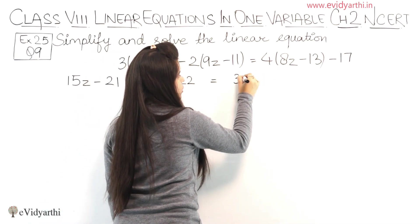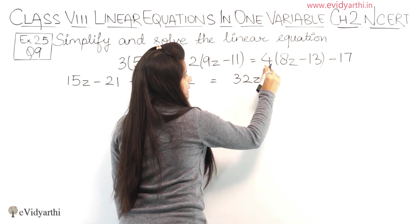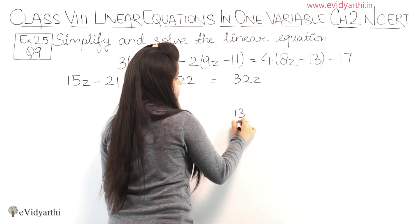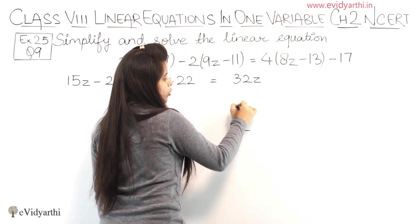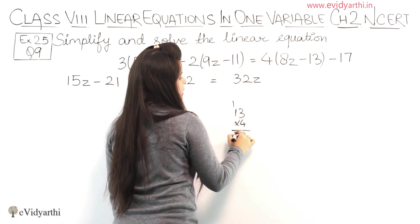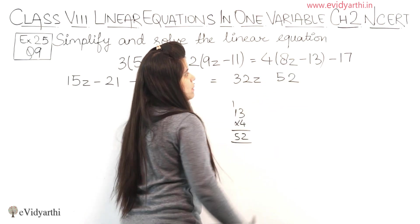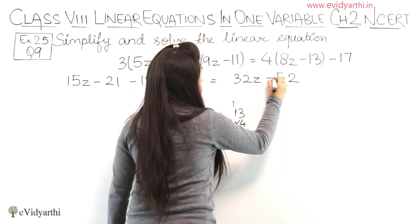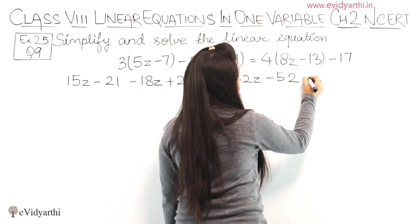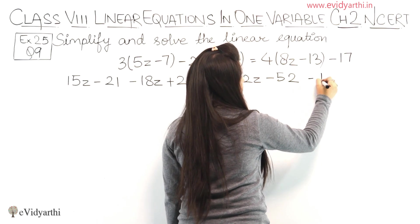8 times 4 is 32z, and then 13 into 4. Let's multiply 13 into 4: 4 times 3 is 12, 4 times 1 is 4 plus 1 is 5, so we have 52. Plus minus minus gives us minus sign. Then we have minus 17.